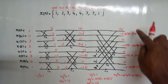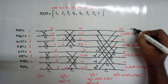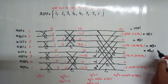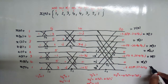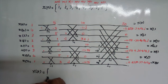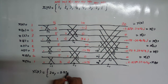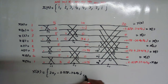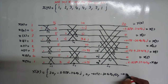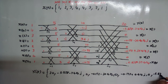So we get the final X(k) values: X(0), X(1), X(2), X(3), X(4), X(5), X(6), and X(7). The final answer is X(k) = {20, 5.828−2.414j, 0, −0.172−0.414j, 0, −0.172+0.414j, 0, −5.828+2.414j}.